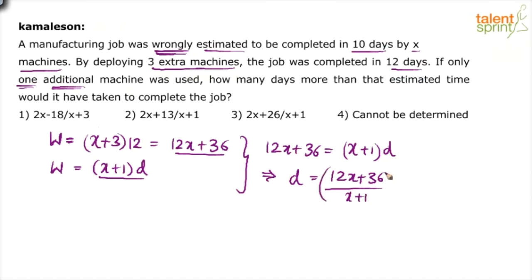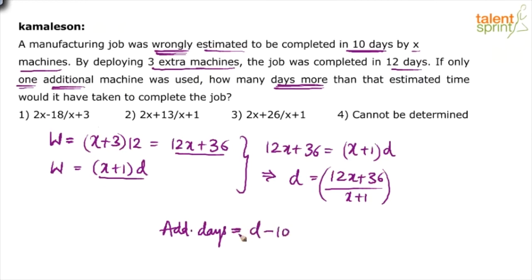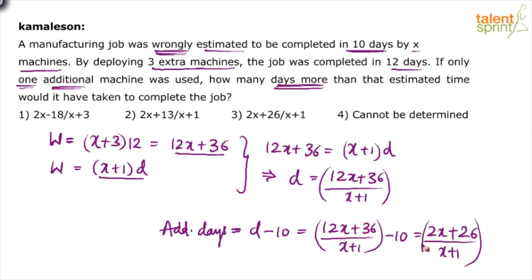What we have calculated is the total number of days D. But the question asks how many days MORE than the estimated time — the estimated time was 10 days. So the additional days = D minus 10, which is (12X + 36)/(X + 1) minus 10. Simplifying: 12X minus 10X gives 2X, and 36 minus 10 gives 26, all over X plus 1. So the answer is 2X plus 26 divided by X plus 1, which corresponds to option 3.